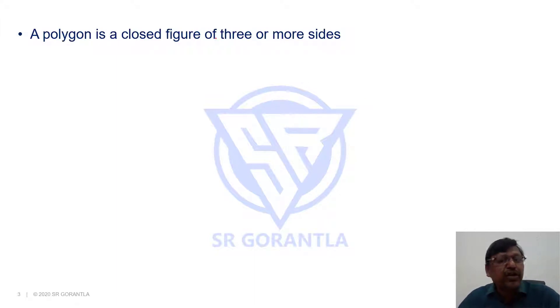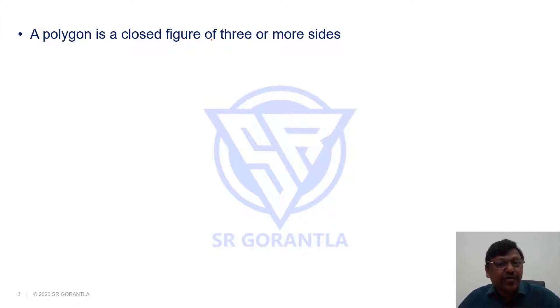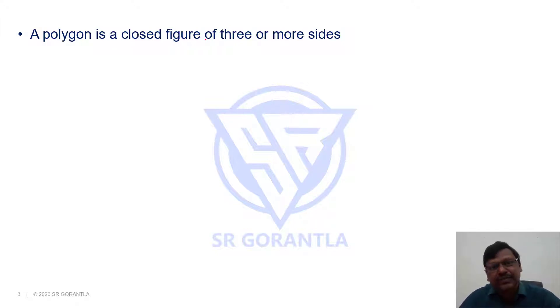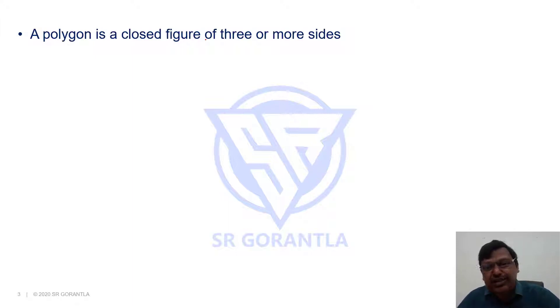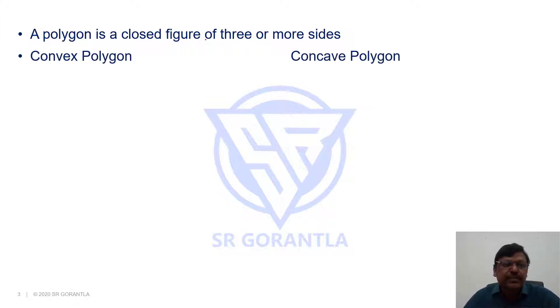If it is a three-sided polygon we call it a triangle, a four-sided polygon we call it a quadrilateral, a five-sided polygon we call it a pentagon, a six-sided polygon we call it a hexagon, and so on. There are two types of polygons: one is a convex polygon and another is a concave polygon.